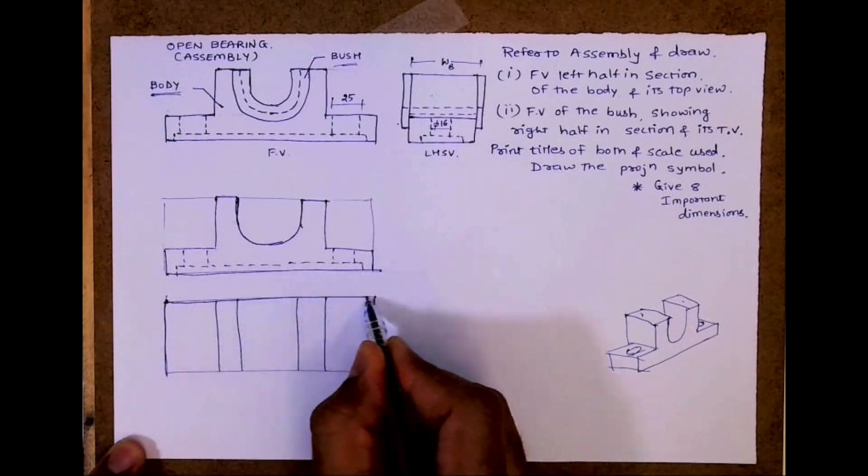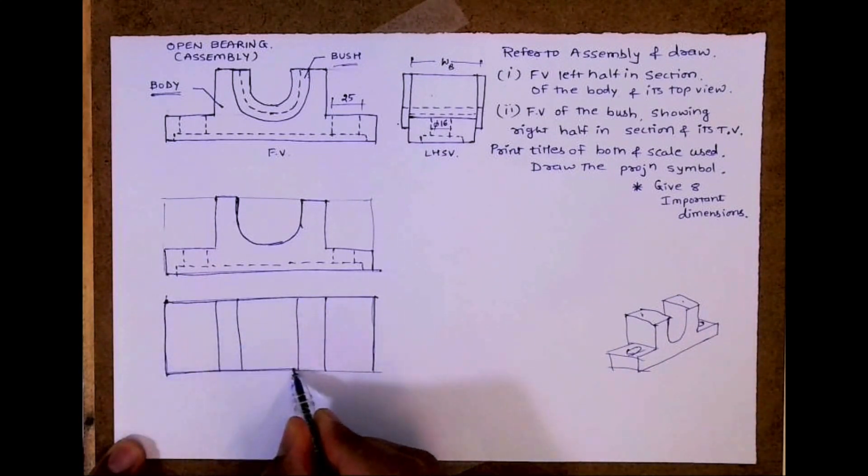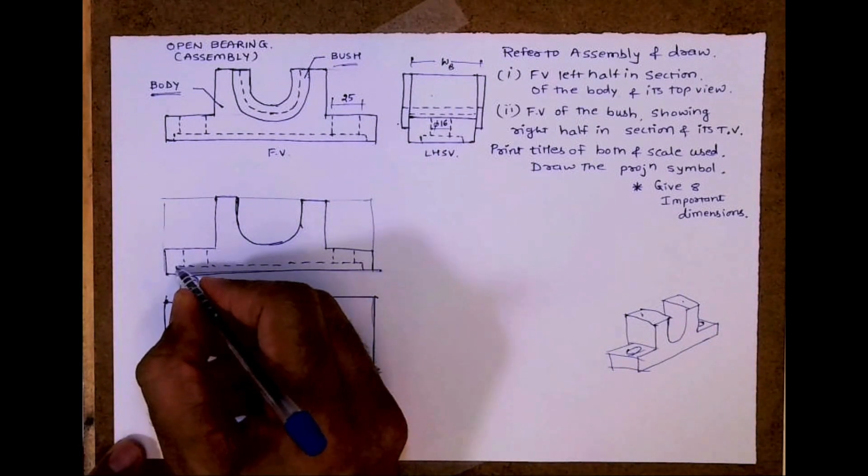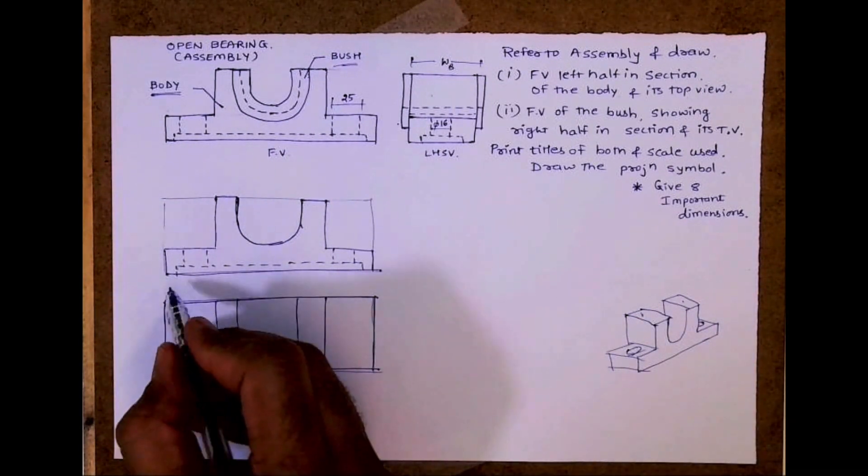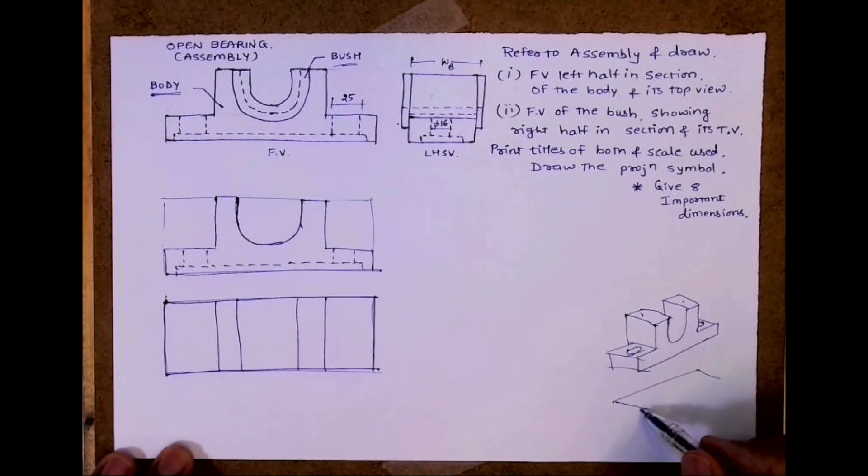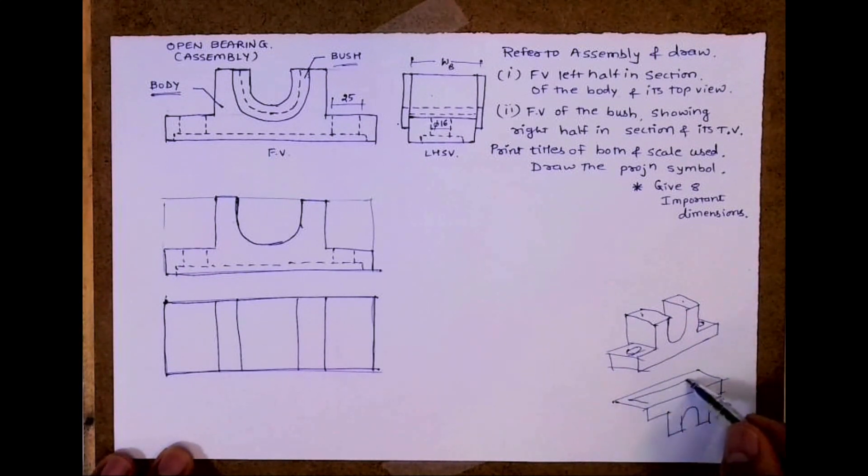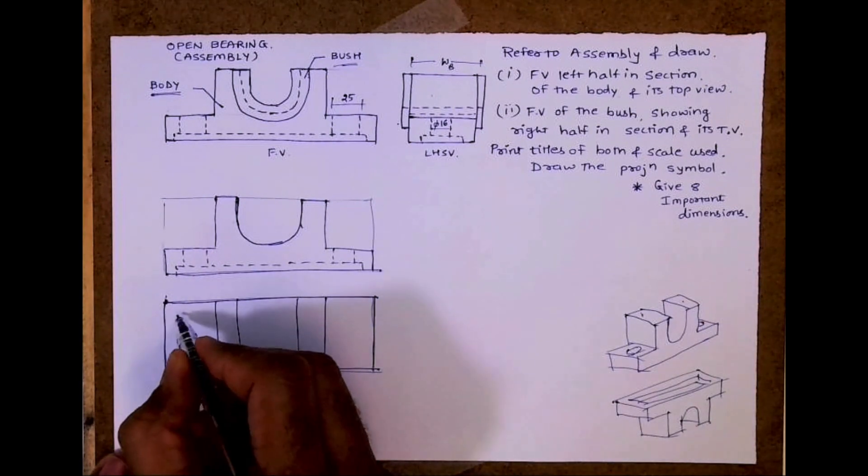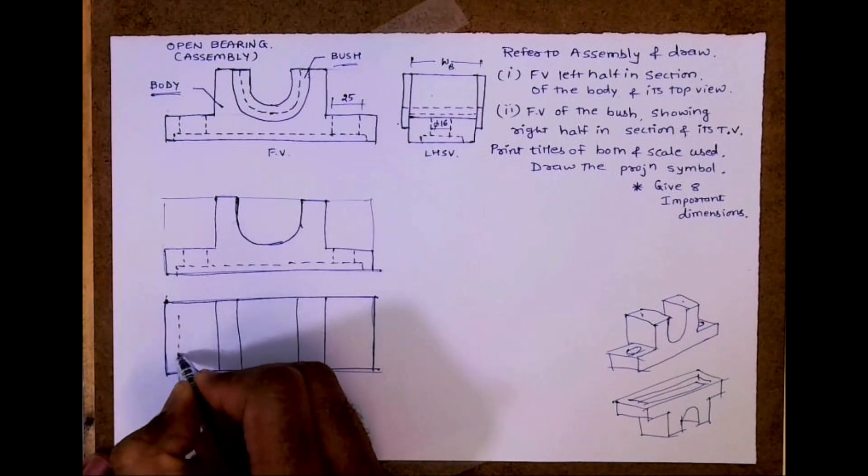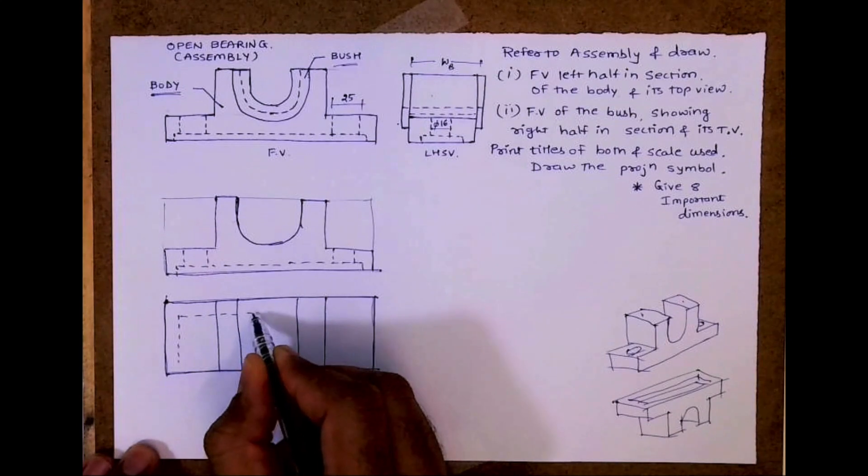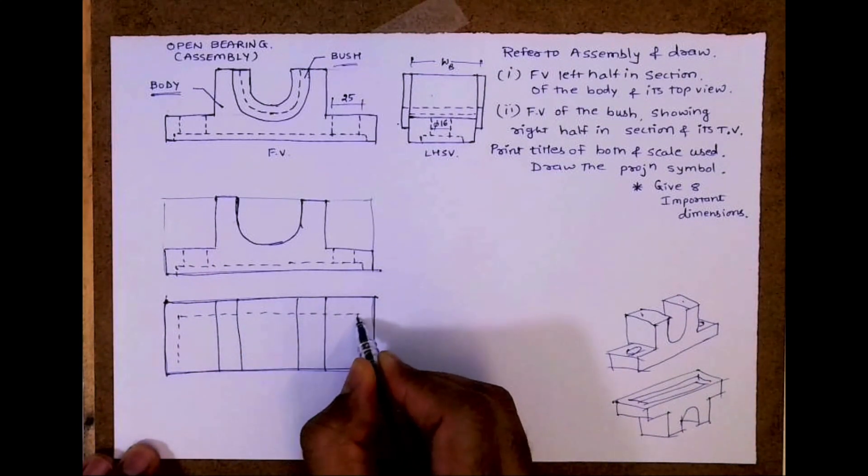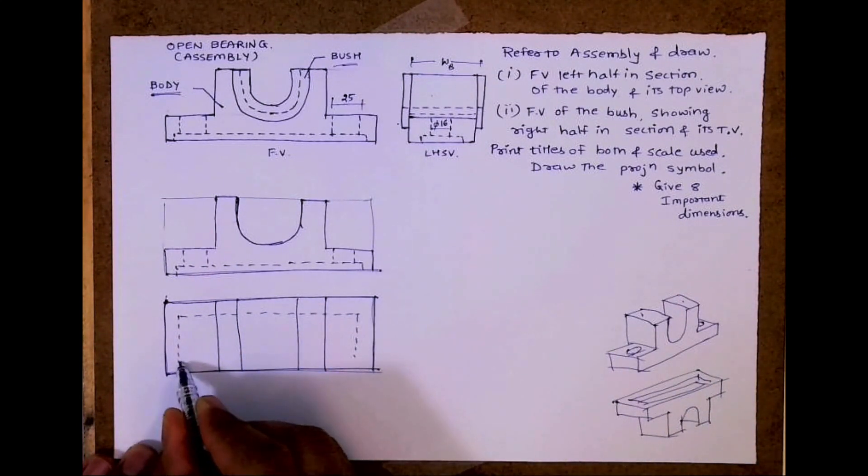This entire thing will be dark. After that, now if you see this dotted, what is this dotted? So if you do this upside down, this open bearing assembly, this body if you do upside down, this is how you will see a slot. See this. So that slot will be dotted over here. So when you see from the top you can't see that slot. They have done that slot to reduce weight.